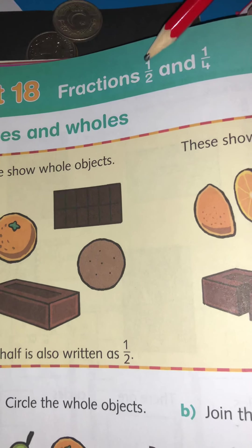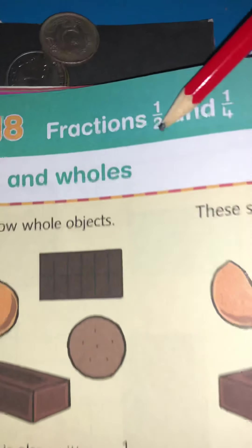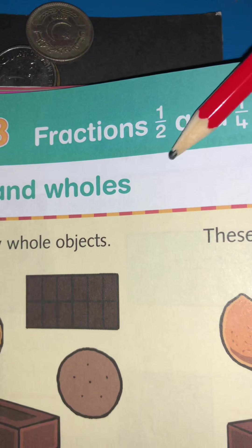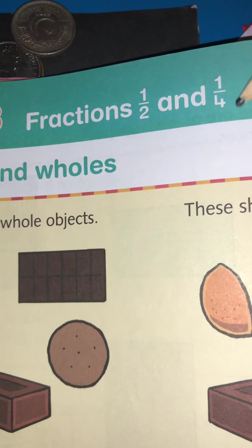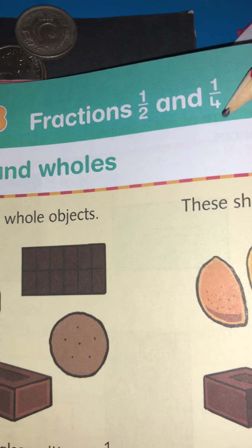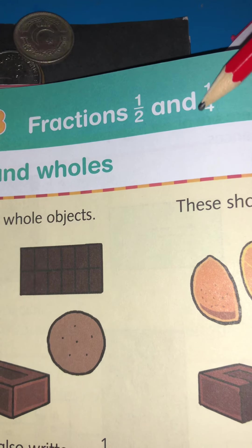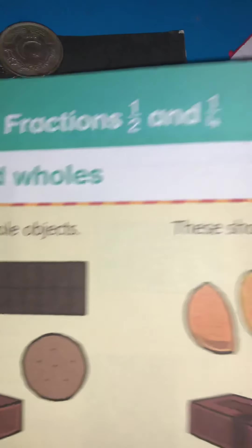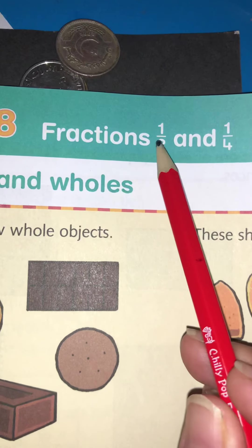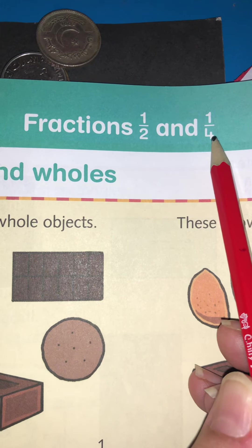1 by 2 is half. You can say 1 over 2 as well. It means half. And 1 over 4, we say it quarter. The 4th part of the whole, that we call quarter. So 1 over 2 is half, 1 over 4 is quarter.